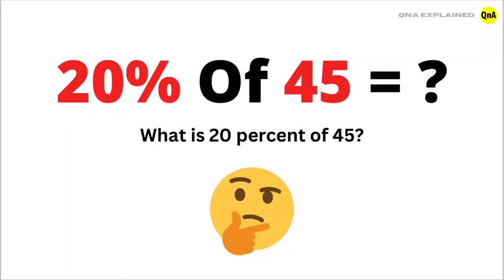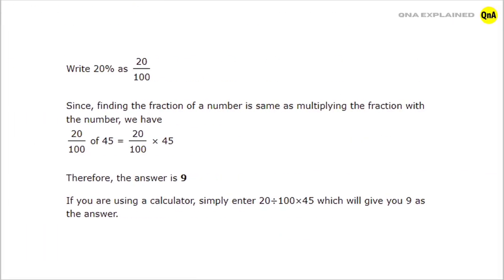What is 20% of 45? Write 20% as 20 upon 100. Since finding the fraction of a number is the same as multiplying the fraction with the number, we have 20 upon 100 of 45 is equal to 20 upon 100 into 45.